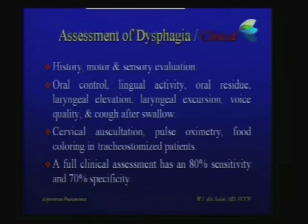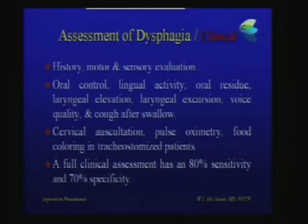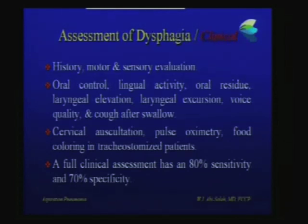How do we assess dysphagia? Clinical assessment is quite important — taking a good history, asking if the patient is on sedatives, whether they aspirate when eating. We evaluate oral control, lingual activity, oral residues, laryngeal elevation and excursion, voice quality, and cough. We can auscultate the neck during swallowing, use a pulse oximeter, or give colored food like Jell-O to a tracheostomized patient and aspirate the trachea to look for it. This gives us about 80% sensitivity and 70% specificity for diagnosing aspiration.